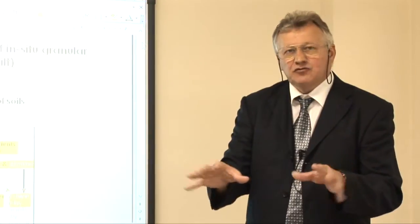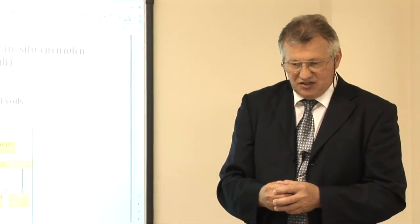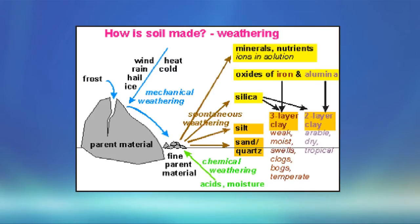The soils we deal with on a construction site are all coming from different types of rocks. Once rocks break up, the larger rocks break into smaller pieces, and then we have different sizes — and if the size is different, we have different names for those soils.